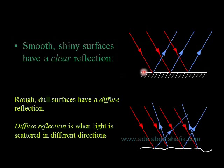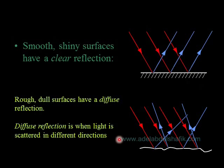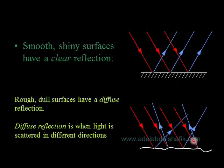A smooth shiny surface like a mirror produces clear reflection, where reflection is uniform all over. A dull surface causes diffuse reflection, where rays scatter in different directions. We want to consider the laws for mirrors.